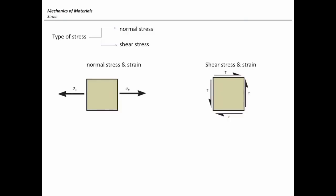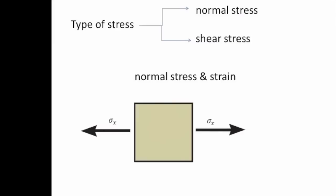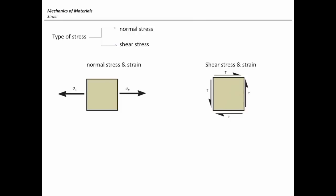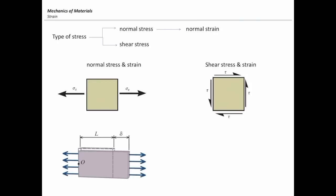If you remember, we have two different types of stresses: normal stress and shear stress. Normal stress is the one where the force is perpendicular to the surface, and shear stress is the one where the force is parallel to the surface. Similar to that, we have two kinds of strains: shear strain and normal strain. Normal strain is caused by normal stress.